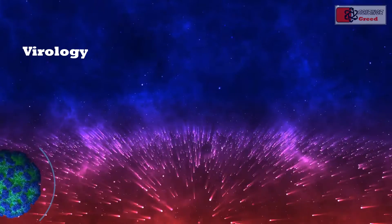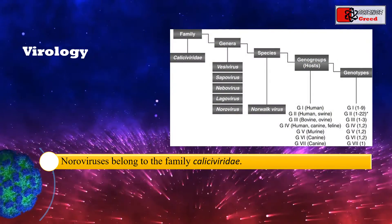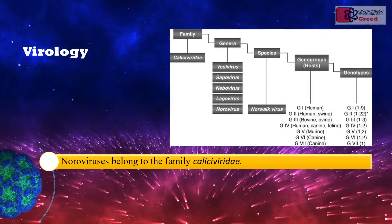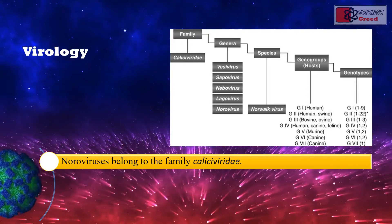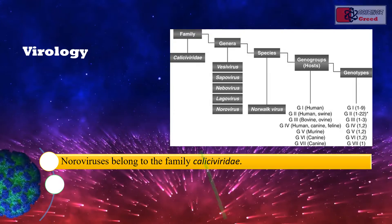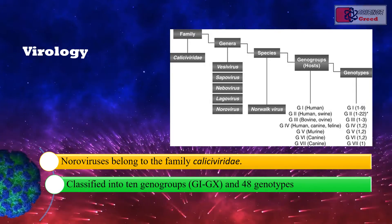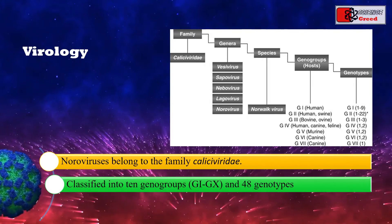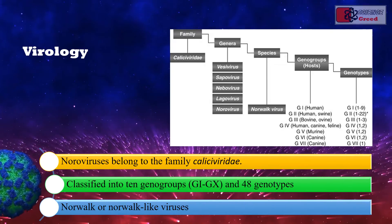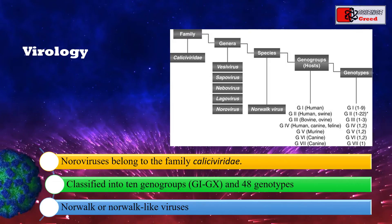Virology. Noroviruses belong to the family Caliciviridae. They are a group of non-enveloped, single-stranded RNA viruses that primarily cause acute gastroenteritis, inflammation of the stomach and/or intestines. Noroviruses are now classified into 10 genogroups, G1 to G10, and 48 genotypes. Noroviruses were previously called Norwalk or Norwalk-like viruses, named after the original Norwalk strain, which caused an outbreak of gastroenteritis in a school in Norwalk, Ohio in 1968.